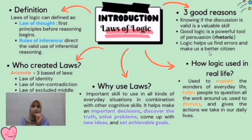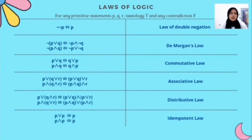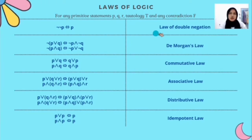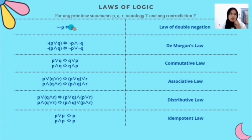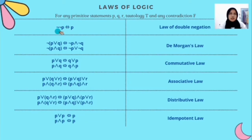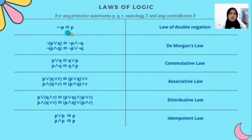That's all for the introduction of law of logic. Next, we will discuss the content of the topic laws of logic, and there are 13 laws that will be used to simplify an argument. The first law is the law of double negation, which is when a statement has double or two 'not' symbols, and it is equivalent to the statement itself. For example, ¬¬P is equivalent to P.